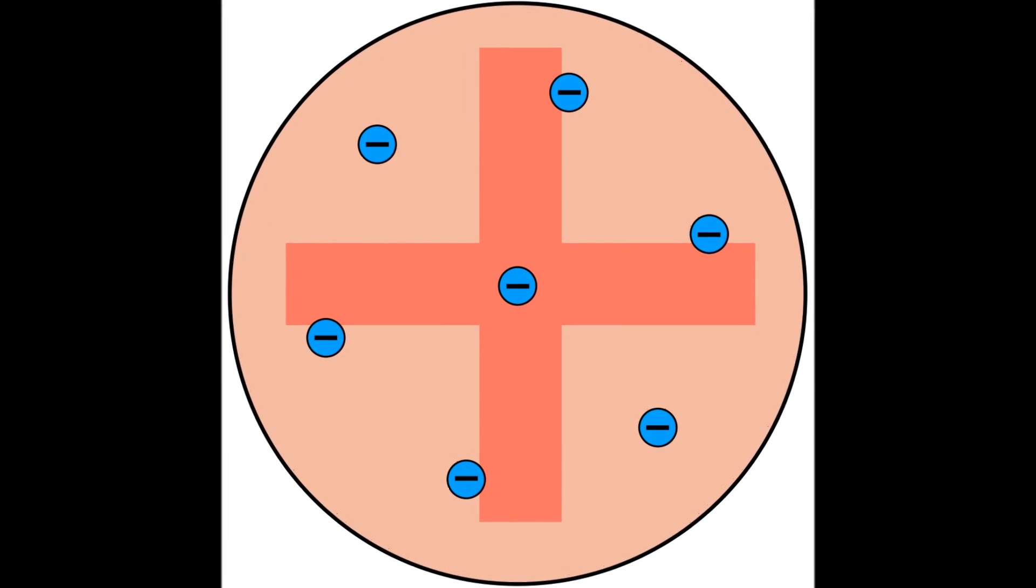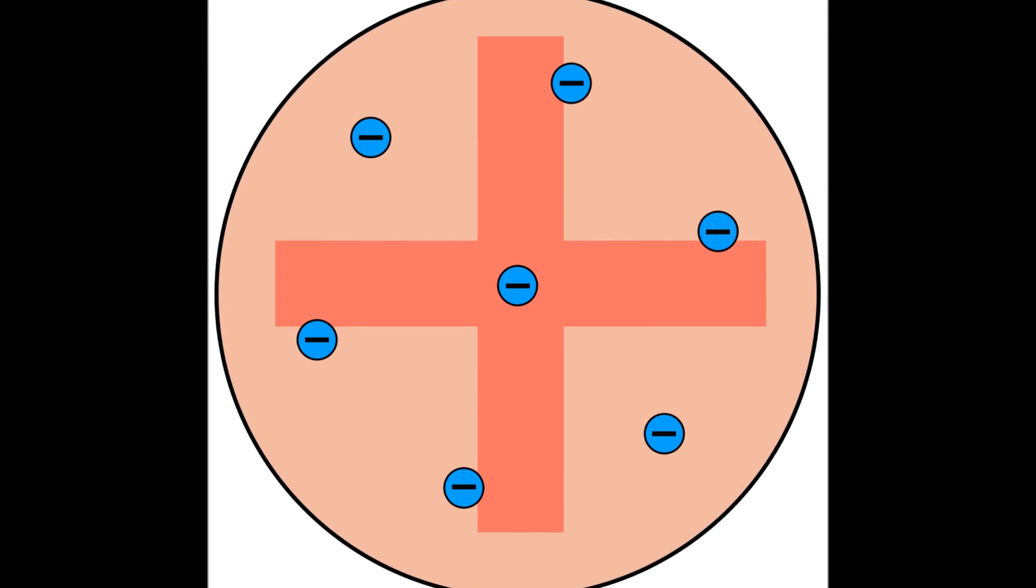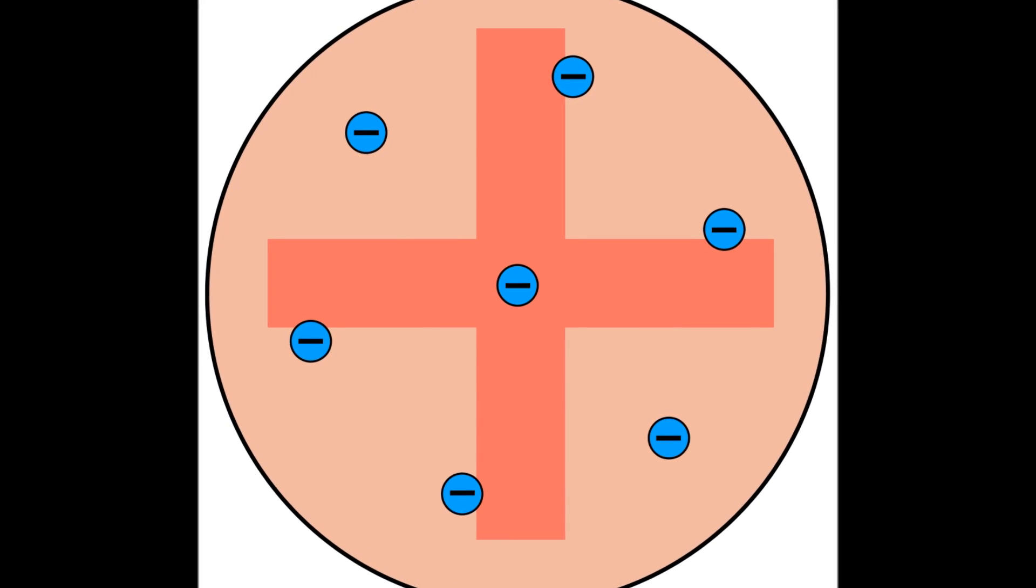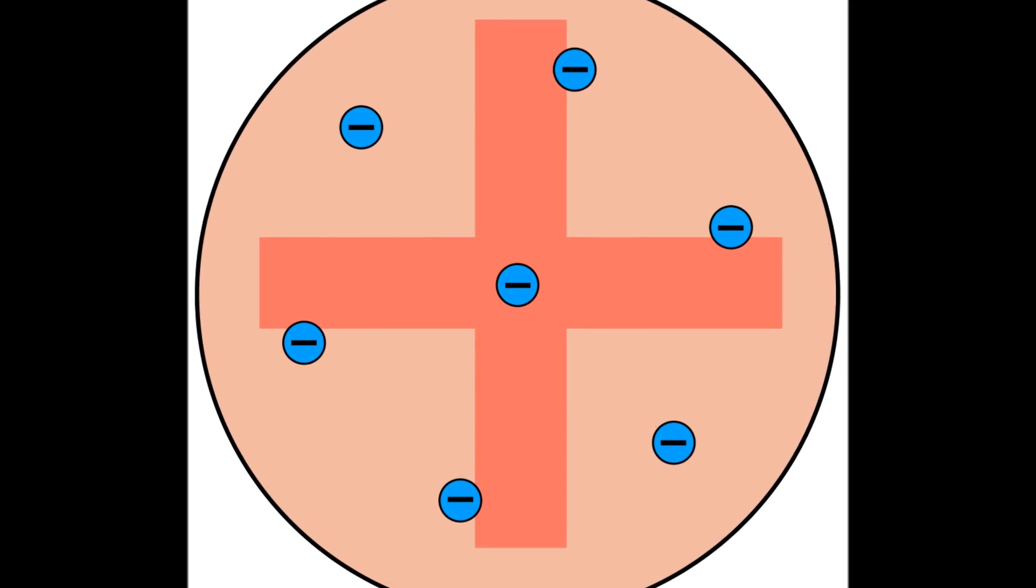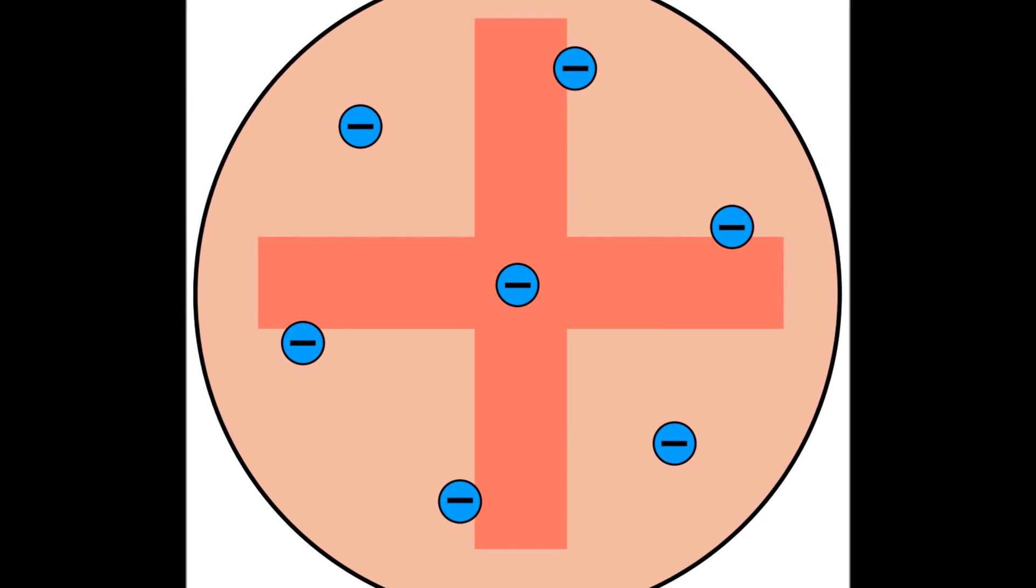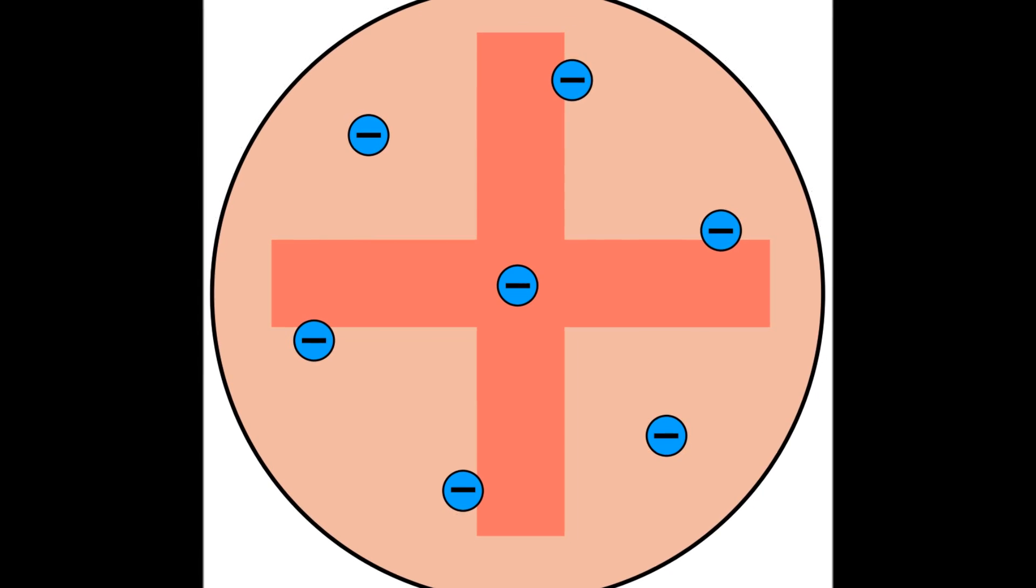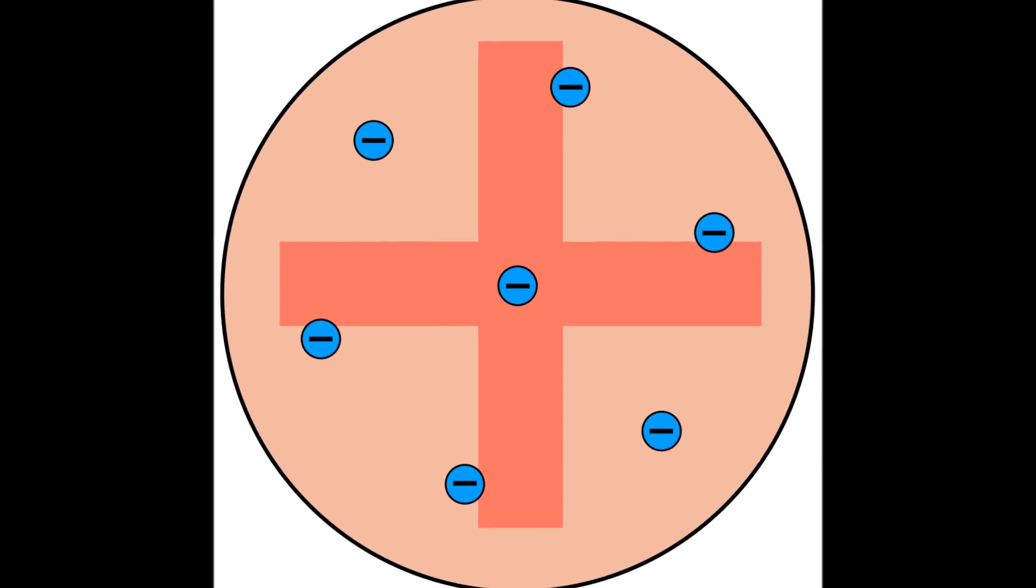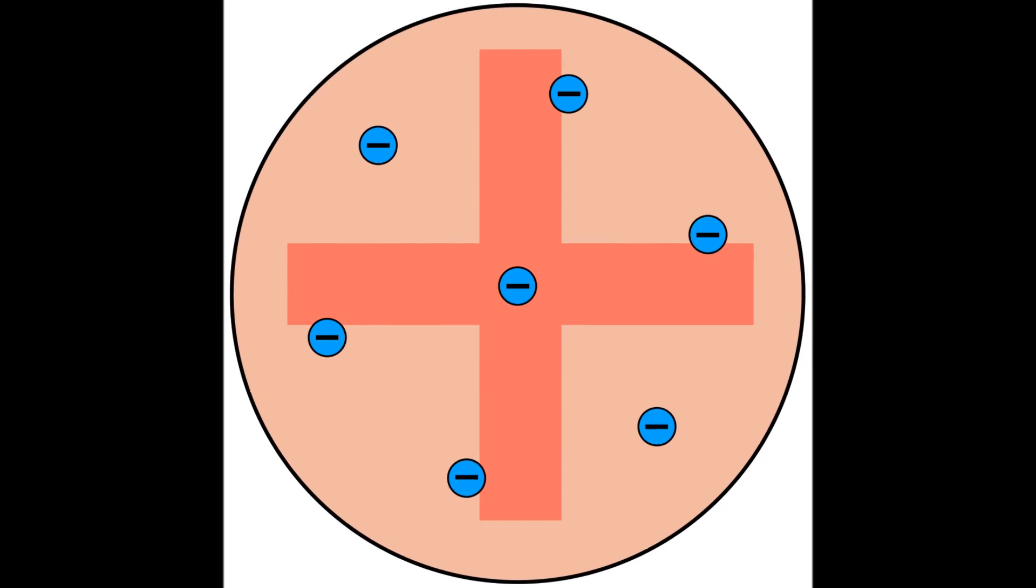Thompson devised the plum pudding model, where the atom was comprised of two components: sponge and plums. The sponge was a large positive core that gave the atom its shape, existing as a uniform cloud of charge, and the plums were small negative charges that dotted the positive core.